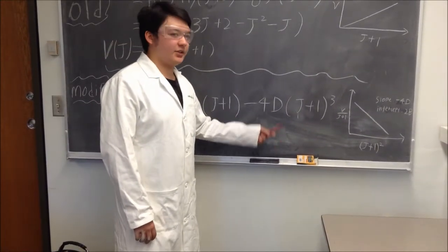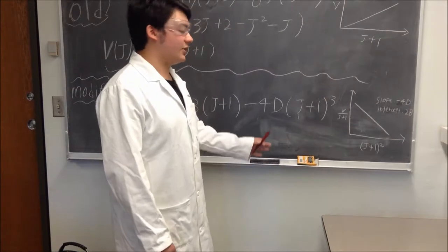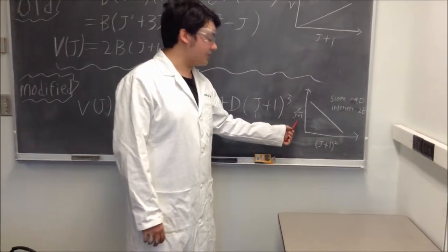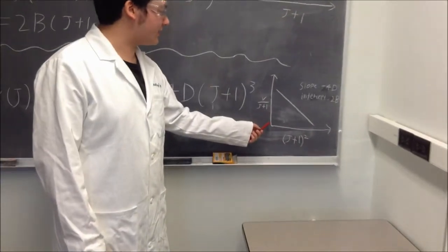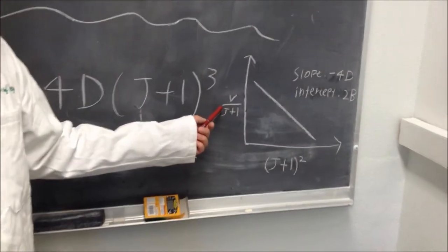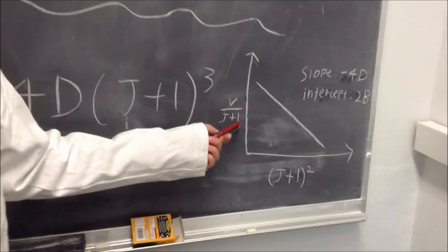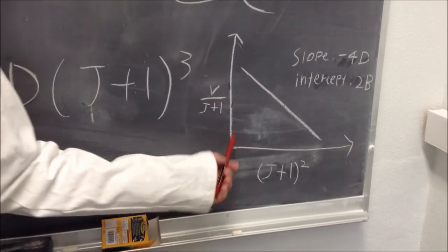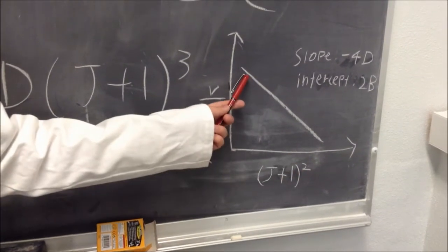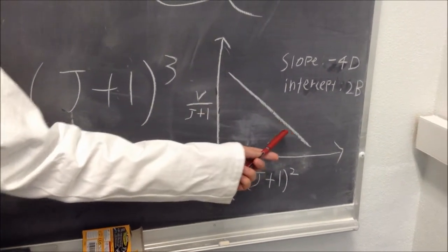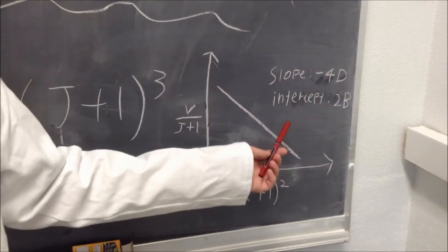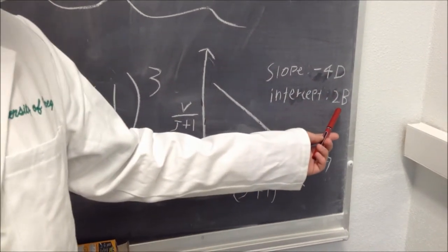We can calculate D if we perform this experimentally. When we graph the data, we have on the y-axis the frequency over J plus 1 versus J plus 1 squared. We should expect a trend line where the slope equals negative 4D and the intercept will be 2B.